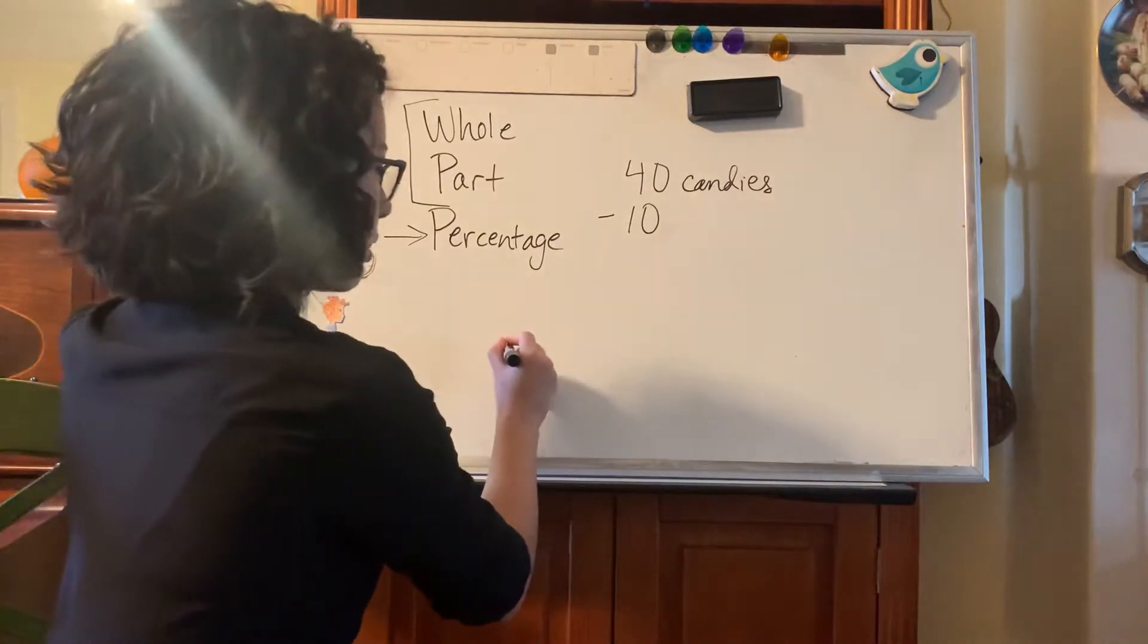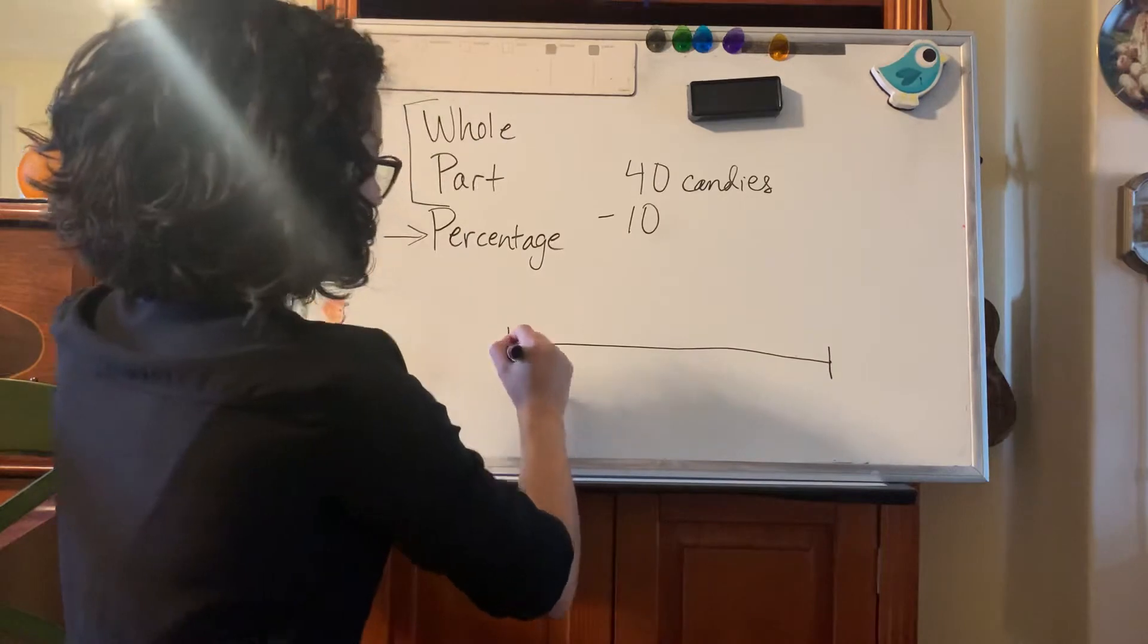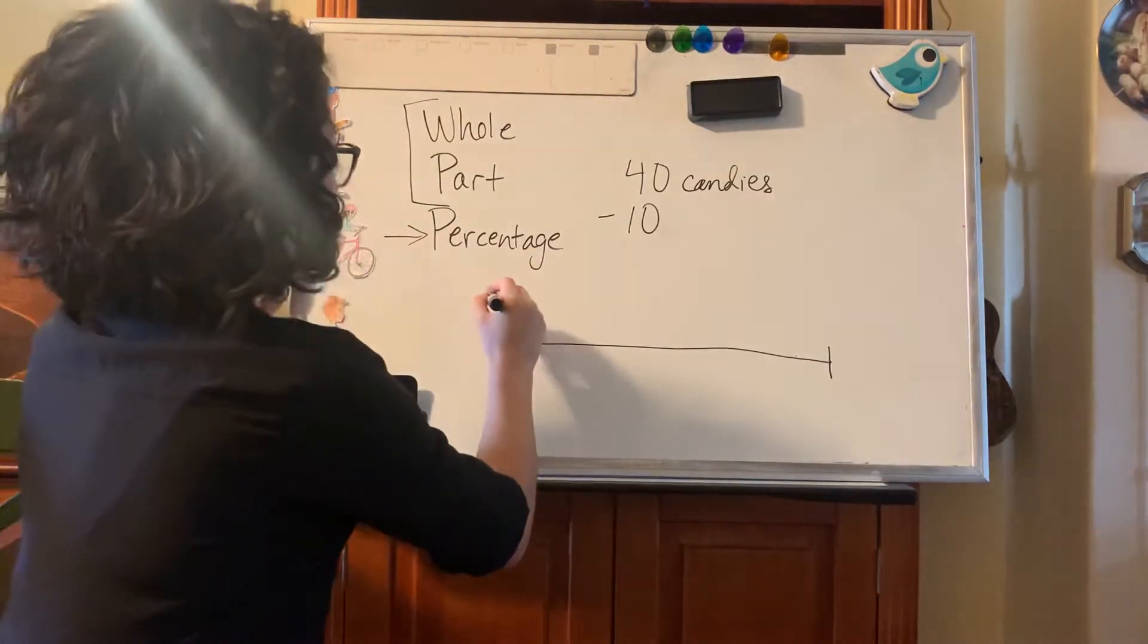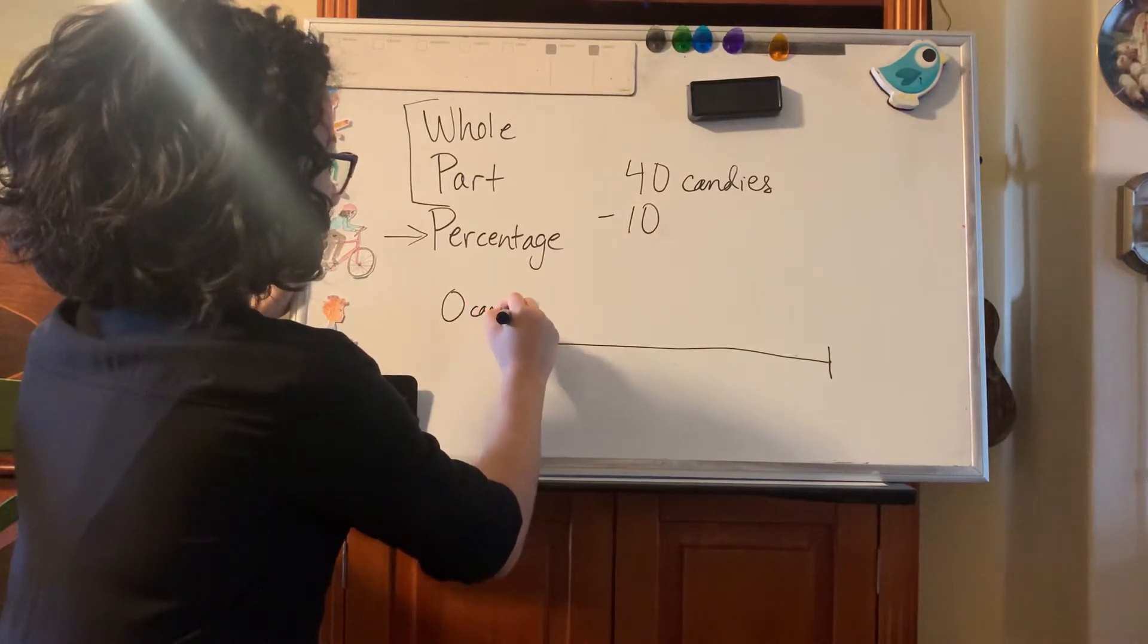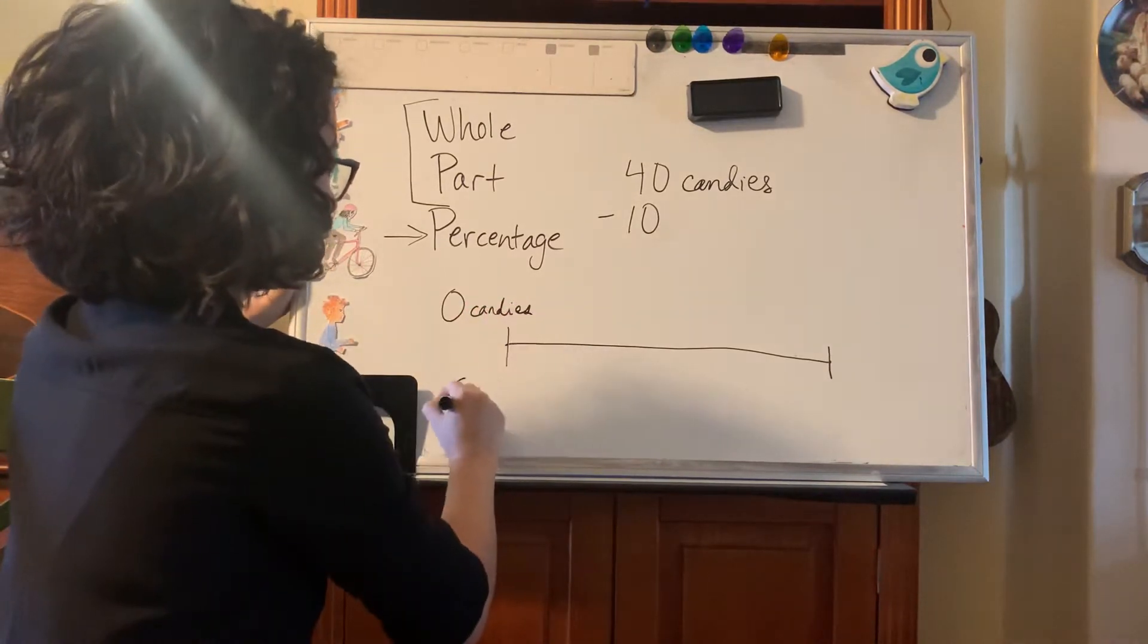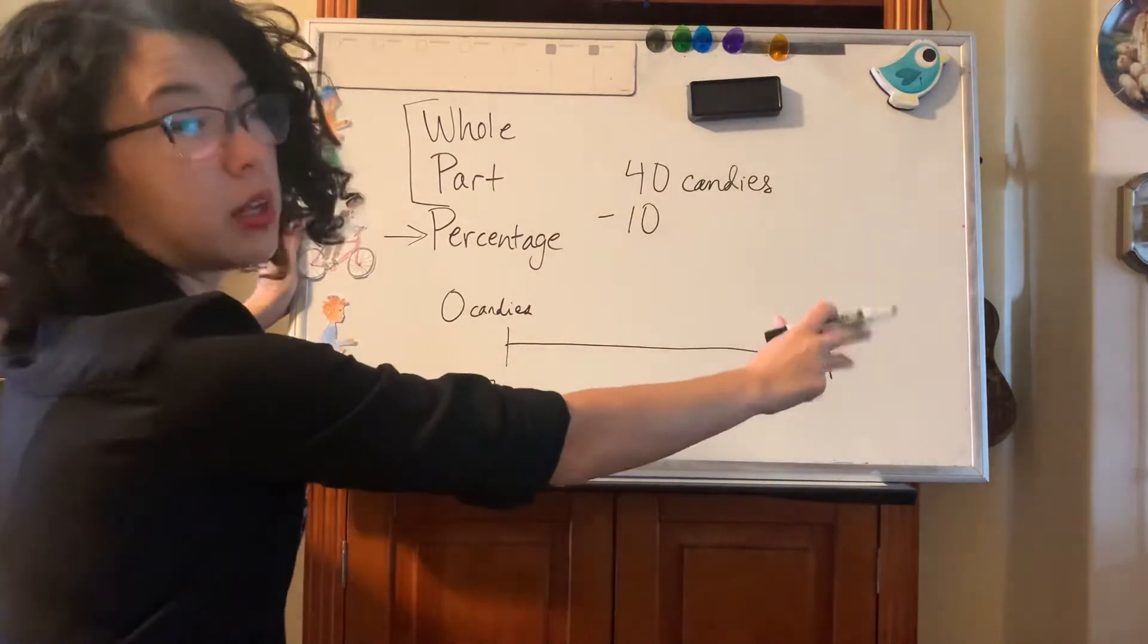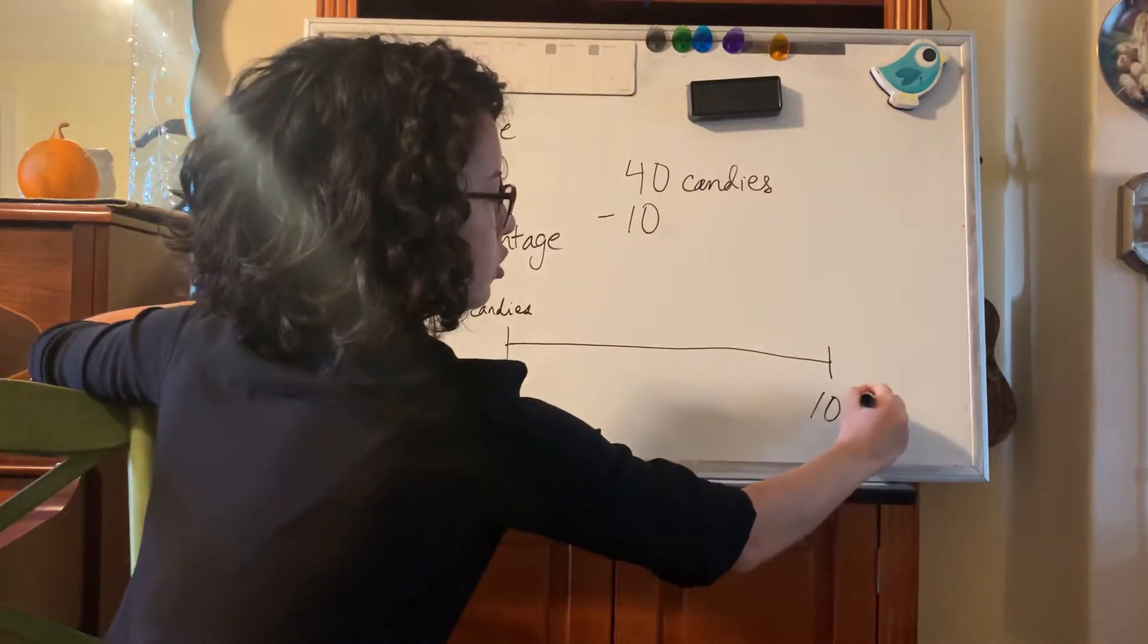So you're going to set up your double number line like this. Draw your straight line, draw your two endpoints, and the beginning of the double number line on the left side always starts at zero. So on the top, zero candy. On the bottom, zero percent. On the other end of the double number line, you're going to put 100 percent because that is your total.